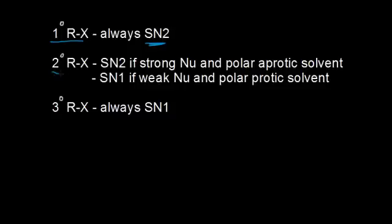Secondary alkyl halides are a little harder to figure out because it could be either SN2 or SN1. To break that tie, you have to look at your nucleophile and your solvent. If you have a strong nucleophile and a polar aprotic solvent, polar aprotic solvents favor SN2 mechanisms. If you have a relatively weak nucleophile and a polar protic solvent, that's going to favor an SN1 mechanism because the polar protic solvent will stabilize the resulting carbocation.